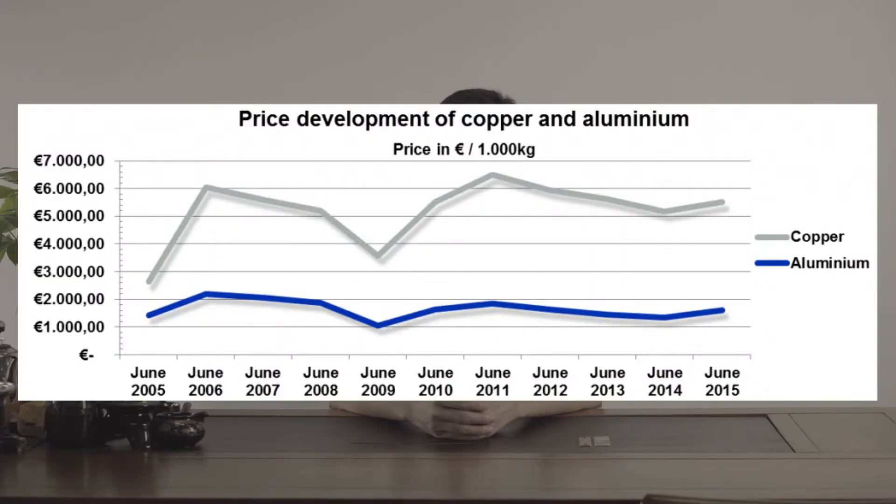Aluminum busbar is lower in price than copper busbar, as aluminum is rich in nature and is easier to get. What's more, the copper market is volatile and its price is more likely to be affected by market demand.